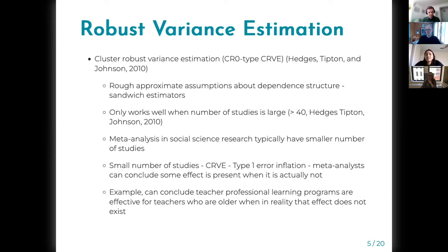When the number of studies is small and you use the CRVE suggested by Hedges, Tipton, and Johnson, type I error can be really inflated and meta-analysis can conclude some effect is present when it's actually not.